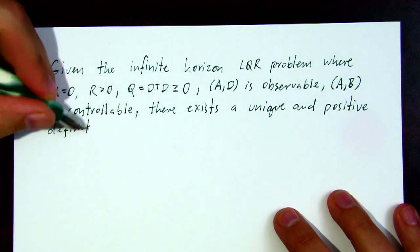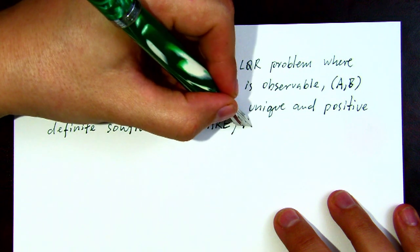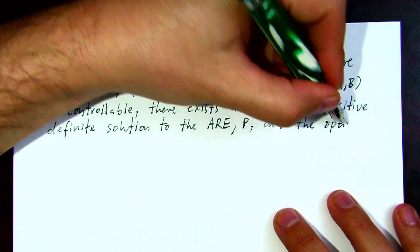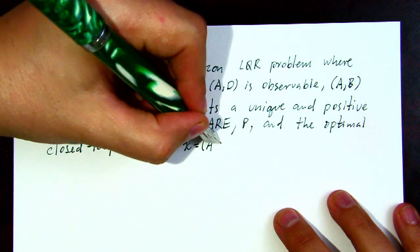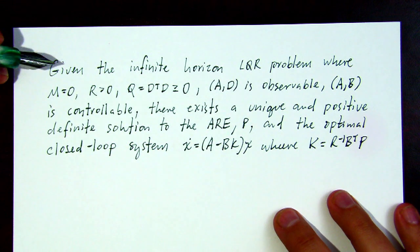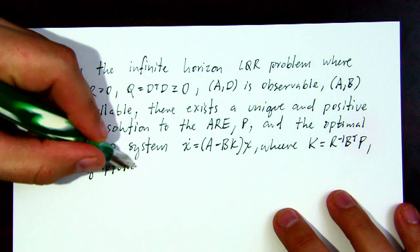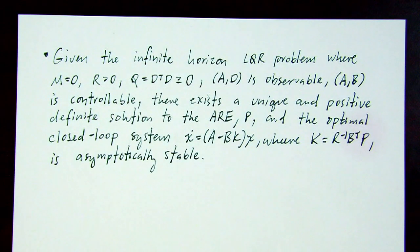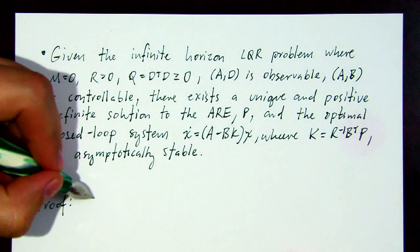The pair (A, D) is observable and the pair (A, B) is controllable. When those conditions are met and we solve the algebraic Riccati equation, we get a solution P that is positive definite and unique. Using that unique positive definite P in the gain equation K = R^{-1} B^T P, the closed-loop system x-dot = (A - BK)x is globally asymptotically stable.